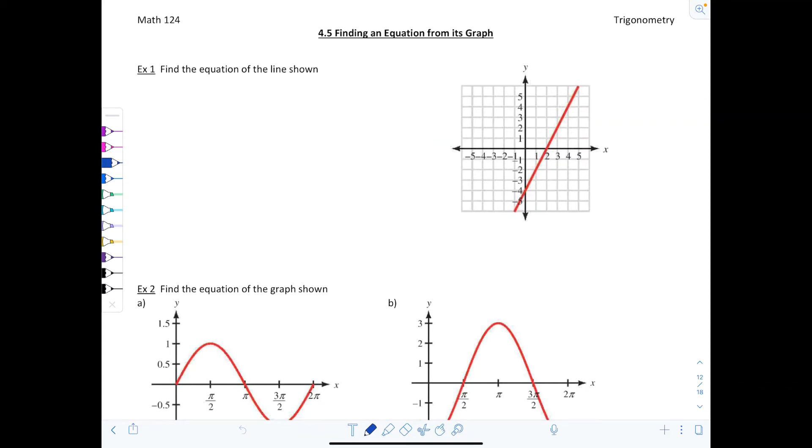Welcome to Trigonometry video lecture for section 4.5, Finding an Equation from its Graph. In this video, we're going to go over how to find the equation for a trigonometric function based on looking at its graph and identifying its key features.